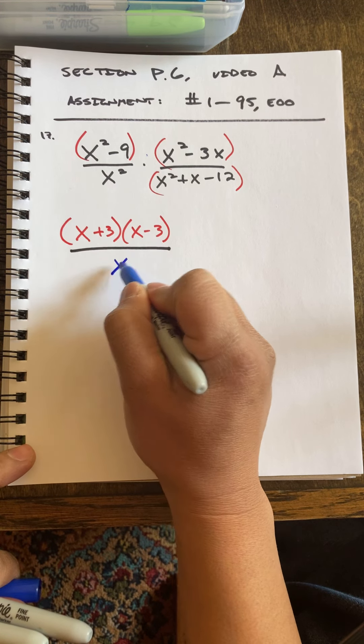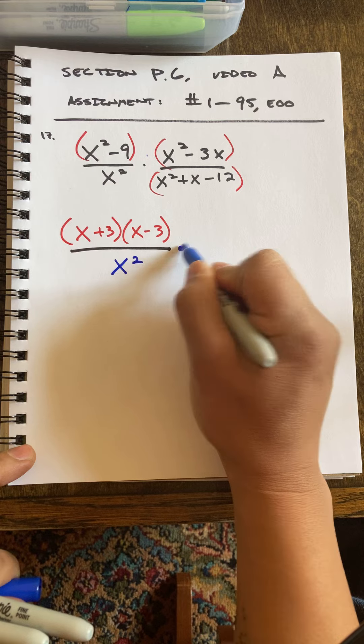X squared is still just X squared. Can't do anything with that. And here's my times symbol.